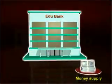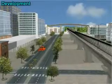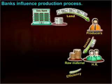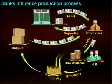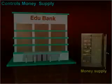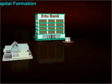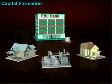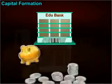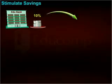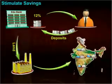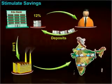Banks play a crucial role in the development of a nation's economy. Banks influence the production process in an economy and also have control over the supply of money. Banks help in capital formation. Shortage of capital formation occurs due to low savings. Banks stimulate savings by offering attractive interest rates, and use these deposits to lend to productive enterprises, which help in nation building.